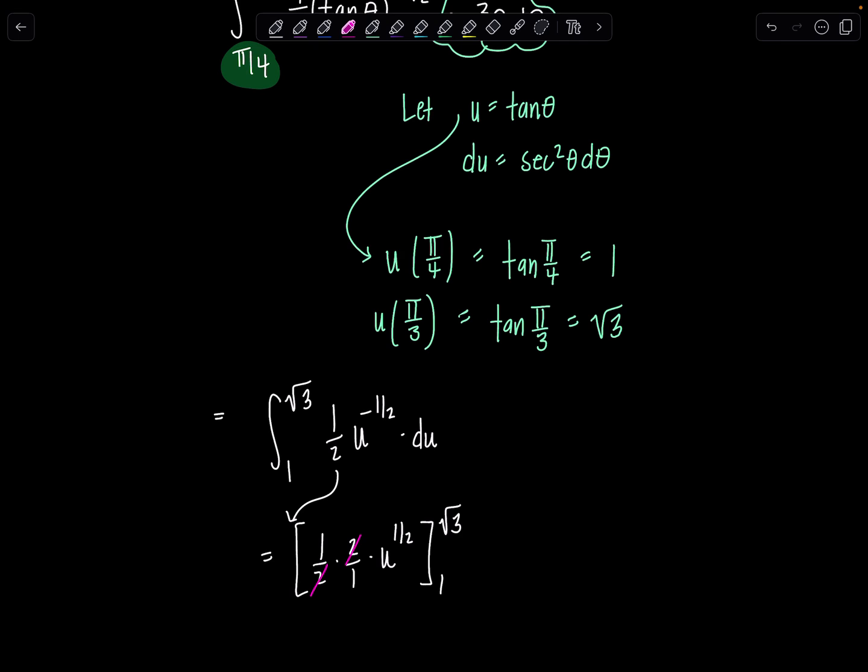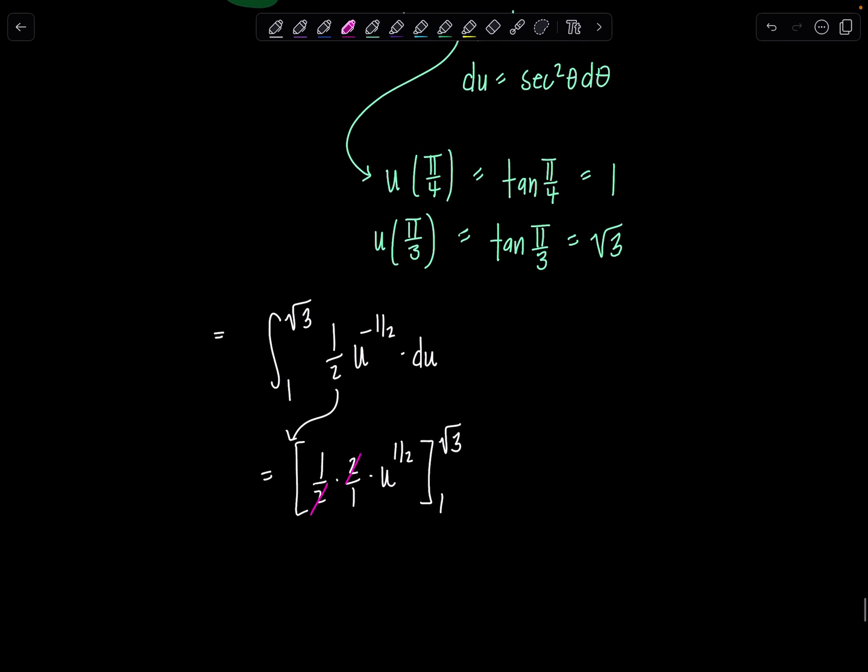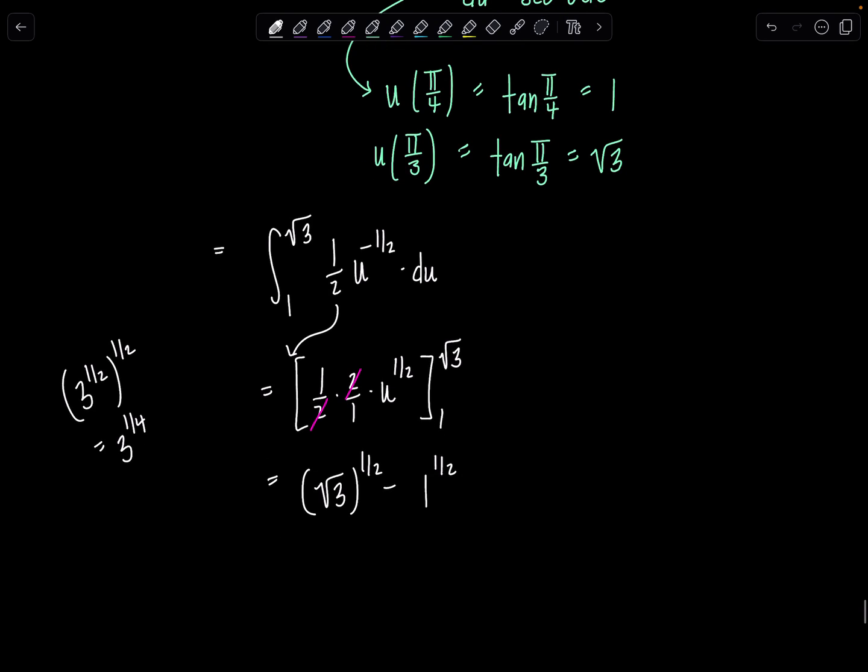Look how nice. The one half and the two just completely cancel. And then here we're left with rad three to the one half minus one to the one half. Now rad three to the one half, think about it this way. Rad three is already three to the one half. Raised to the one half again, we would multiply those exponents. So that's three to the one fourth. Three to the one fourth, that's the same as fourth root of three. So that's how I'm going to leave my answer. I'll write fourth root of three minus one.